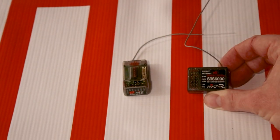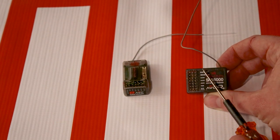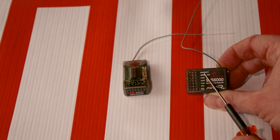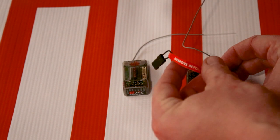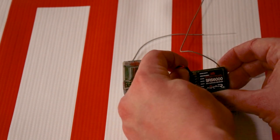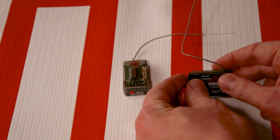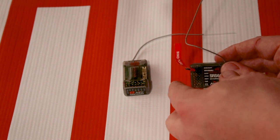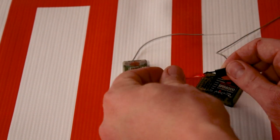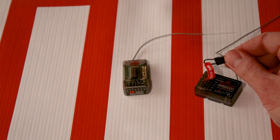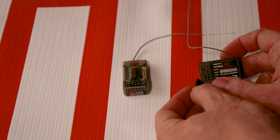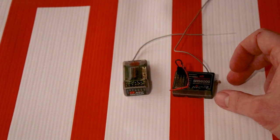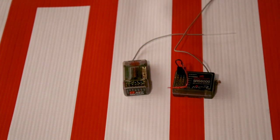Let's real quickly go over how to bind. It's very simple. You'll have either a bind port like this receiver here has, a bind/bat port, where you'll take a bind plug which usually comes with the receiver and your transmitter. They're not specific to the receiver, they are universal. They are simply just a jumper that is jumping the negative pin to the signal pin on your receiver.